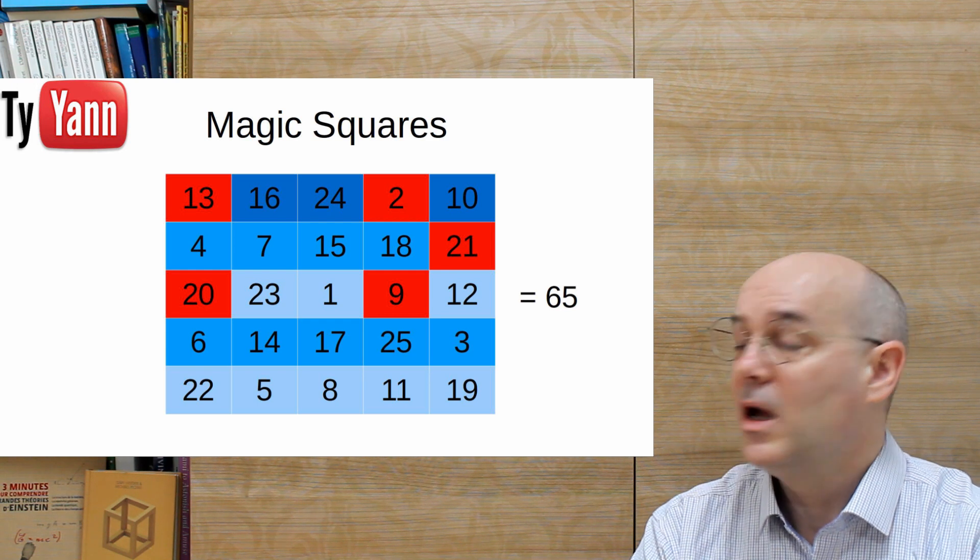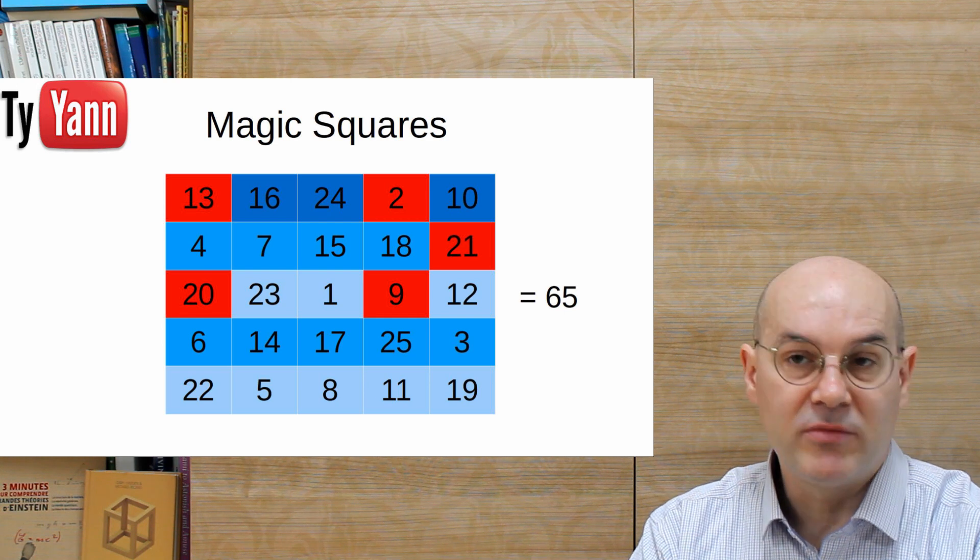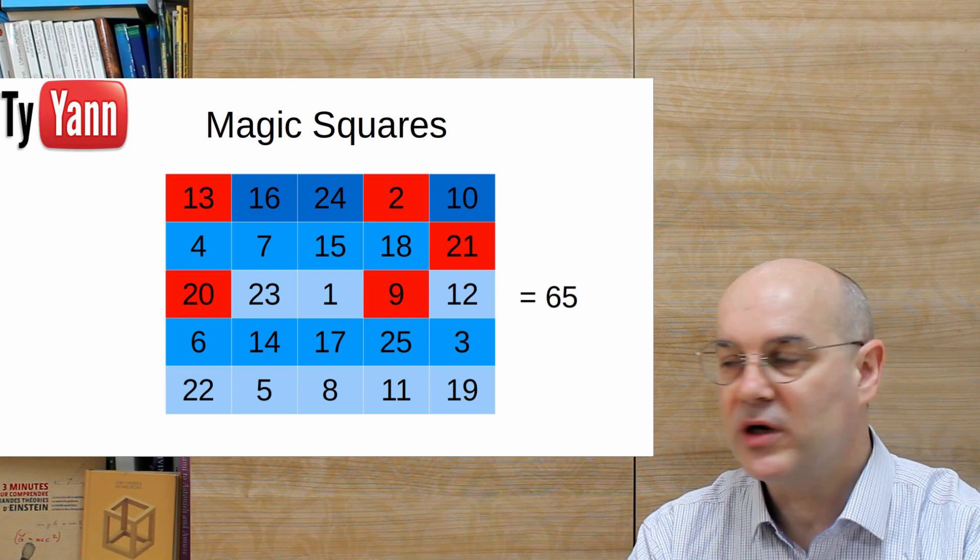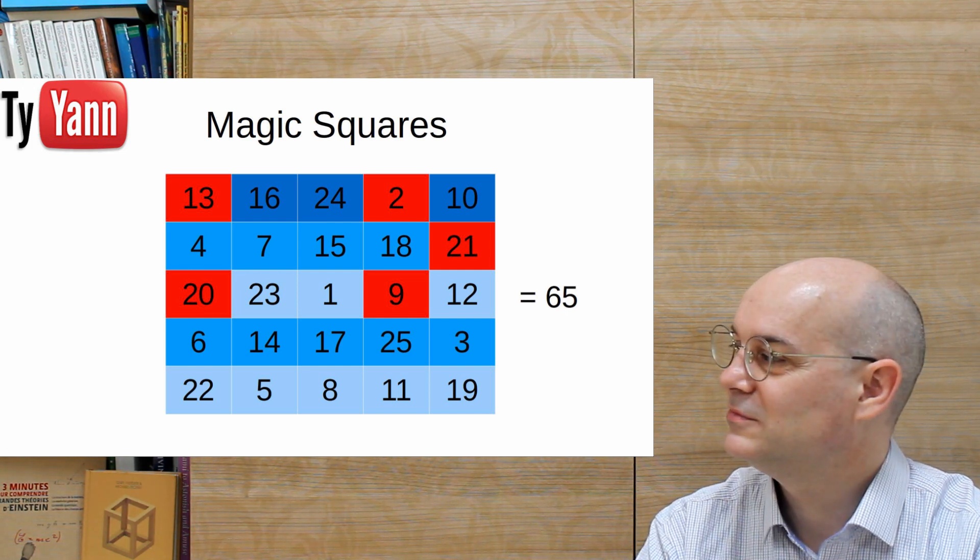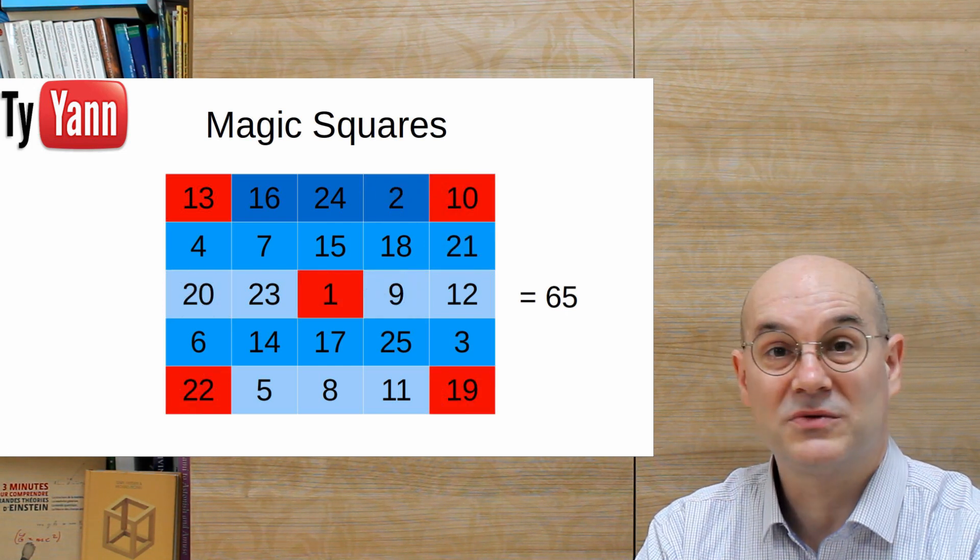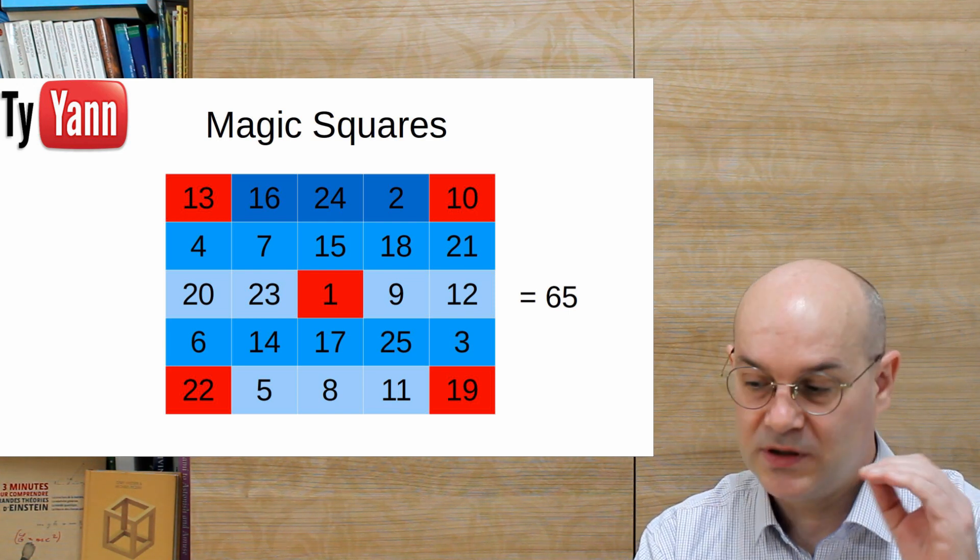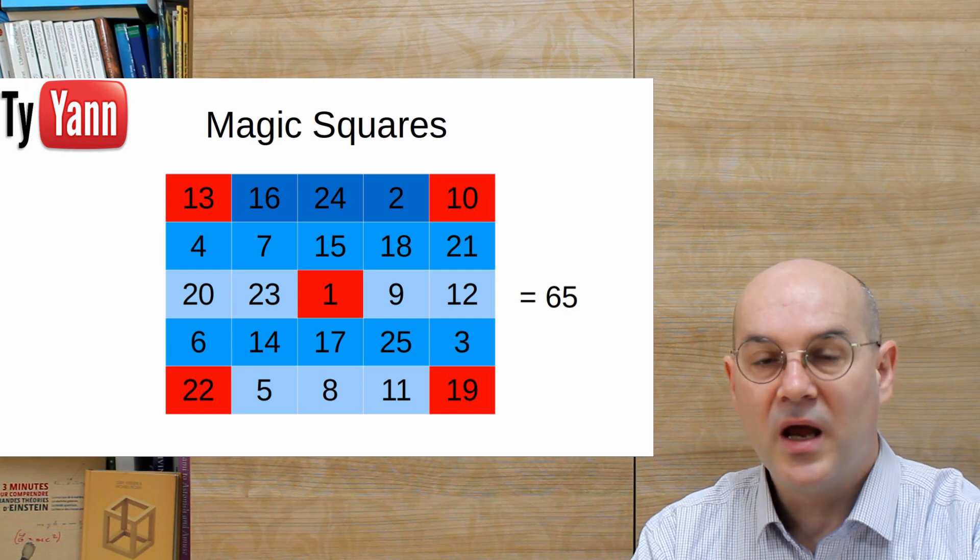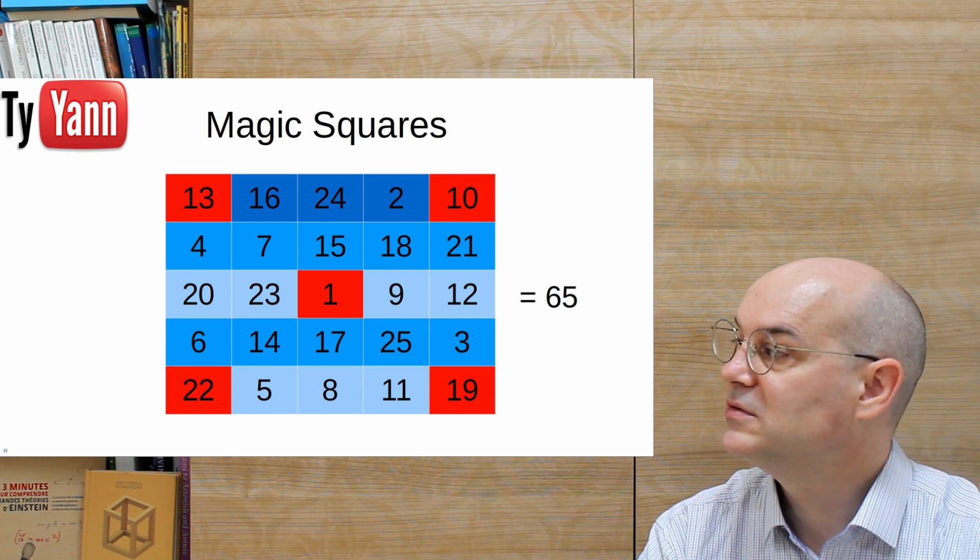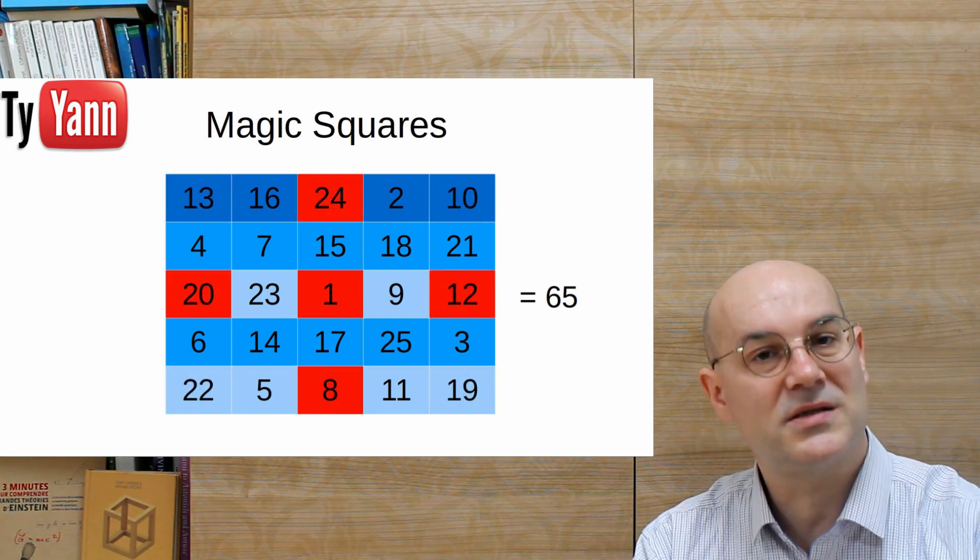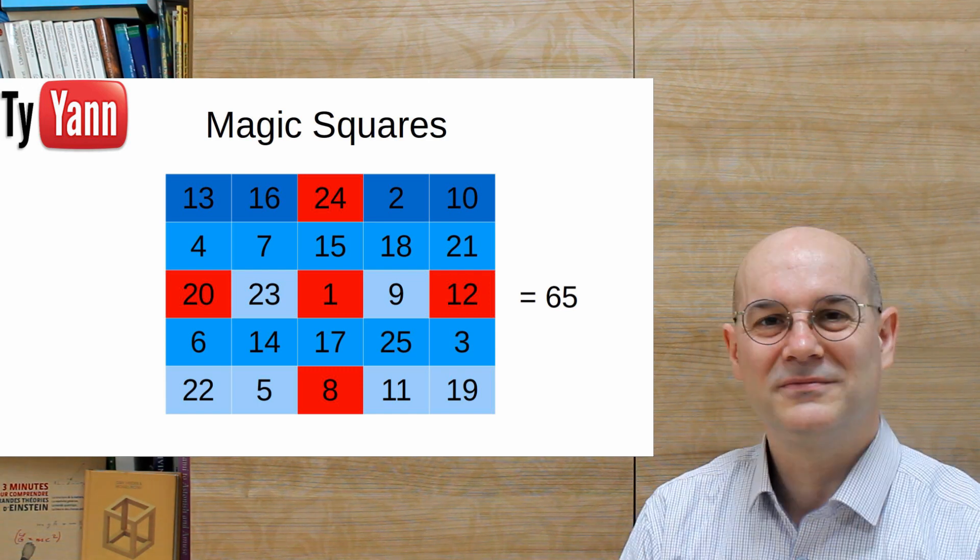What about we take the center square, which we started by one. We could have started the one anywhere we wanted, but anyway, the one and the four corners. Like this. Guess what? Yes, we get again 65. But there's more. What about we still take the center square and the four middles of the edges. Like this. Yes, we get again 65. Isn't this cool? I really like it.